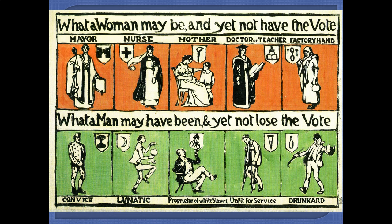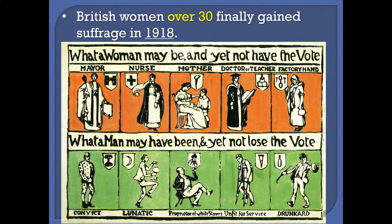This is a really interesting piece of propaganda to encourage people to give women the right to vote. The message is: 'What a woman may be and yet not have the vote' — women can be all these positive things and still not get the right to vote. 'What a man may have been and yet not lose the vote' — a man can do negative things and still keep his vote. It's trying to show that gender doesn't give someone a natural right to rule over the other half of the population. By 1918, finally, women gained the right to vote — at least if they were over the age of 30 — so still not totally equal with men, but certainly making strides.